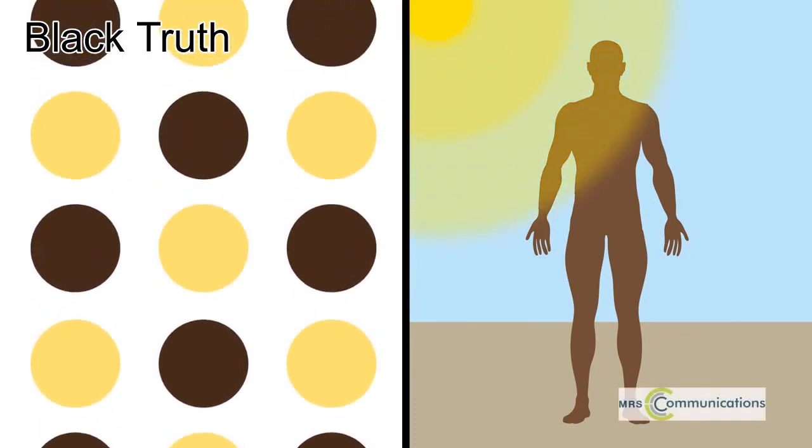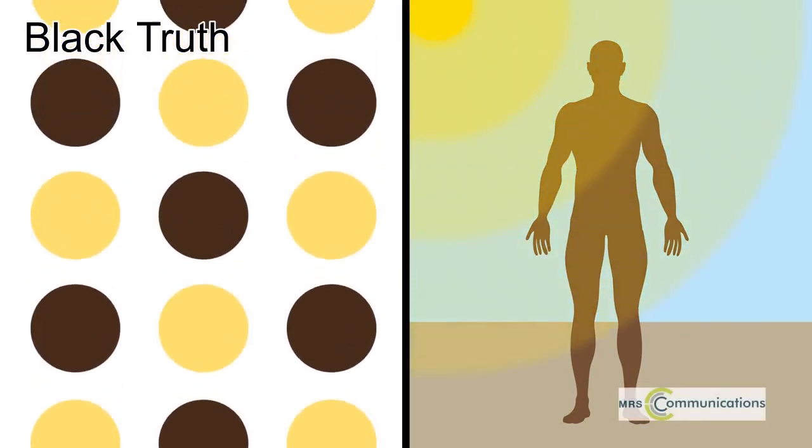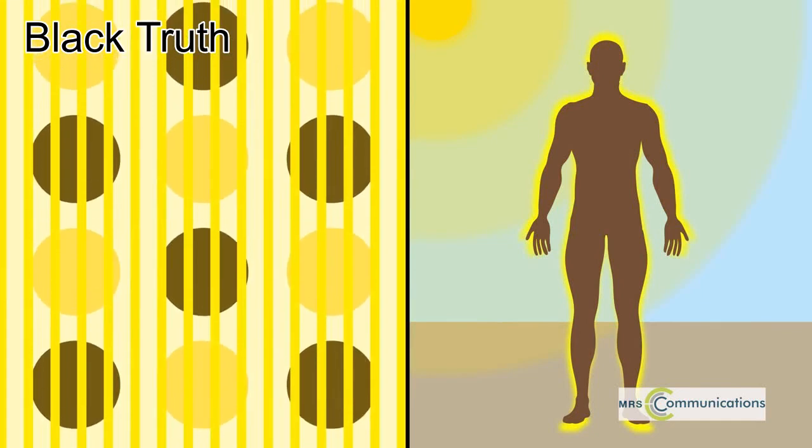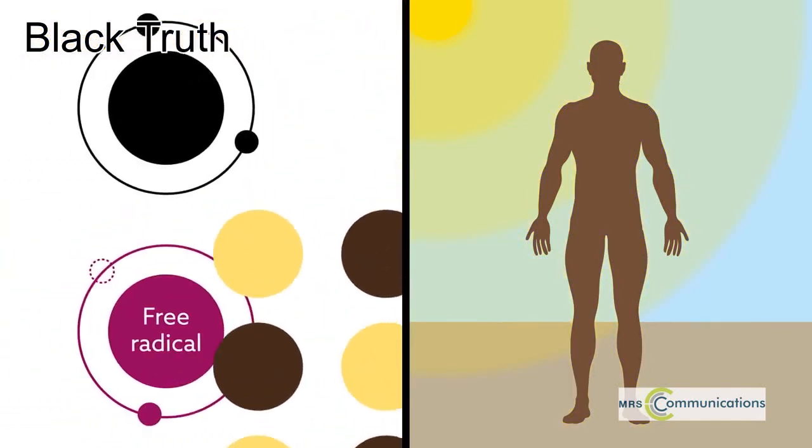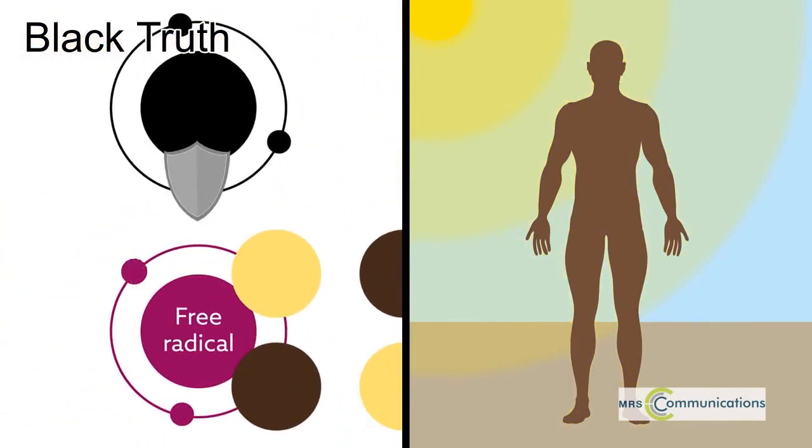Melanin is a versatile molecule. Not only is it responsible for giving us our UV blocking complexion, at the cellular level it gobbles up harmful radicals that lead to diseases such as cancer and Parkinson's.